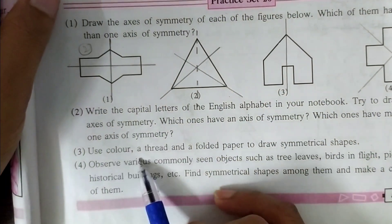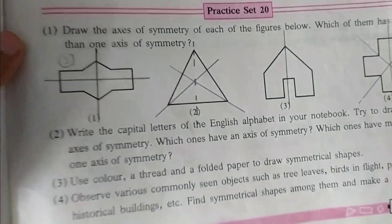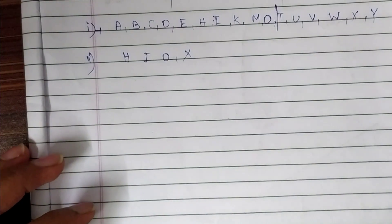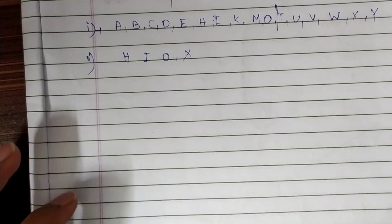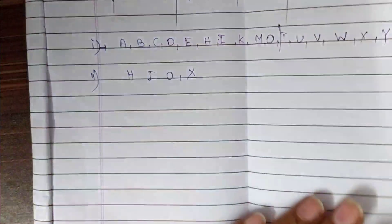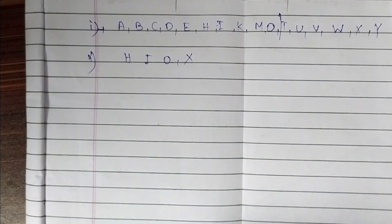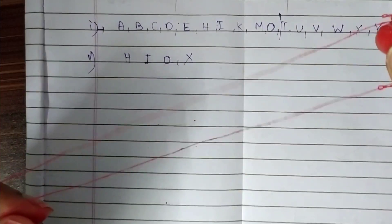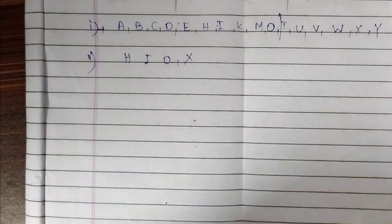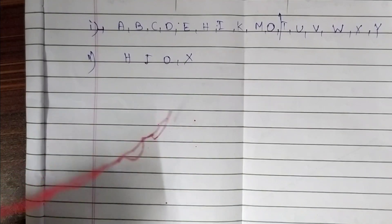Question 3: use a colored thread and folded paper to draw symmetrical shapes. We are going to draw a symmetrical shape with a thread. First of all, fold the paper into two equal parts like this. You can see an axis of symmetry easily. Now I am going to use a colored thread to make a symmetrical figure.